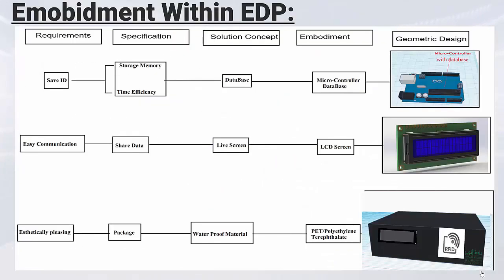Another important part is embodiment within the ADP, tackled by the team in order to have a functioning, beautiful, and comfortable physical mock-up. In this part, we use all the previous parts such as specifications, requirements, and solution concepts. For example, in order to respond to the requirement of saving ID, we need good storage memory and time efficiency in uploading or loading the data, so the best solution is to use the Arduino Uno database. The same applies to other requirements. At the end, we gather all the data and implement the final device.